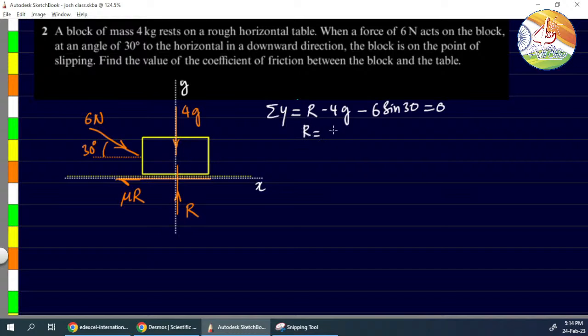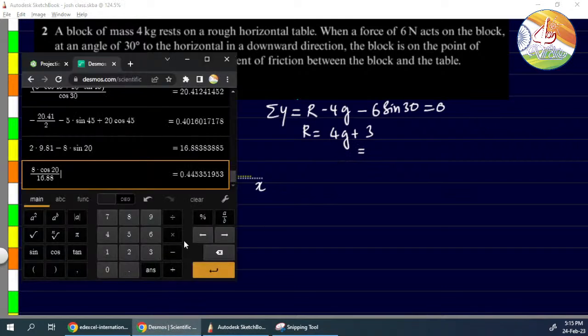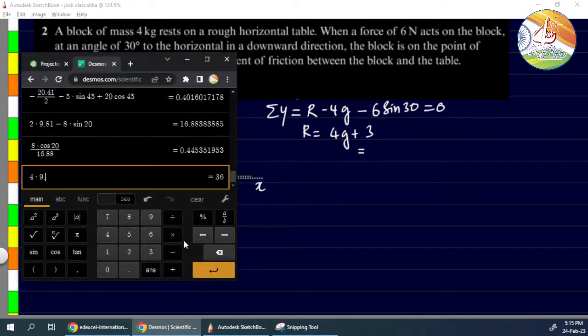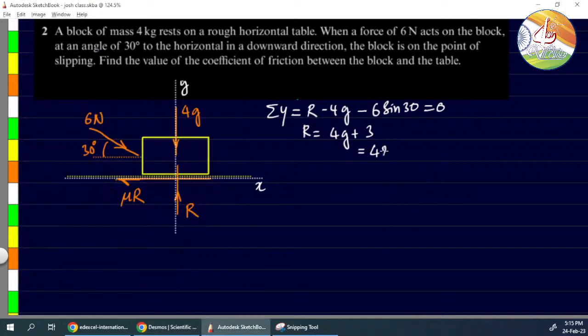R equals 4g plus 6 sine 30. Sine 30 is 1/2, so that's 3. 4g plus 3 gives us 22.24 Newtons.